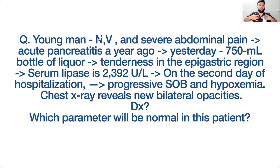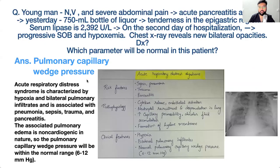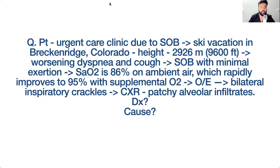A young man with nausea, vomiting, and severe abdominal pain — he had acute pancreatitis a year ago and consumed 750 mL of alcohol the night before due to partying. He has epigastric tenderness and high serum lipase. On day two of hospitalization, he develops shortness of breath and hypoxia with white-out lungs on chest X-ray. Diagnosis: ARDS. Which parameter will be normal? Pulmonary capillary wedge pressure — PCWP.